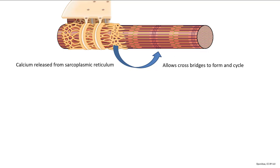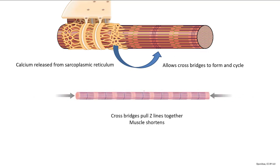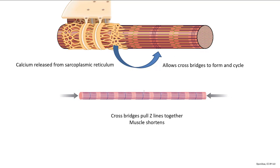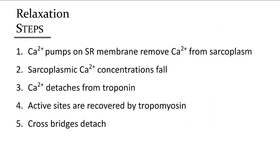This causes the Z-lines to pull together, ultimately shortening the whole muscle. For relaxation, calcium must be removed from troponin. This is accomplished by pumps on the sarcoplasmic reticulum that pump the calcium back in — out of the cytosol, off of troponin, and back into the sarcoplasmic reticulum.